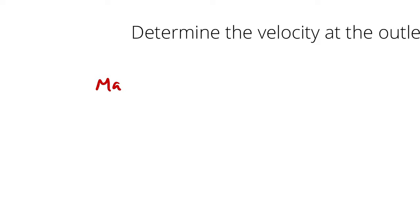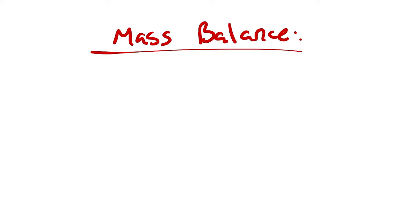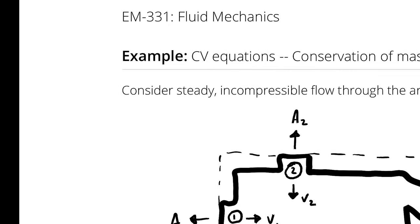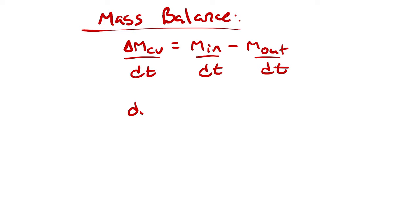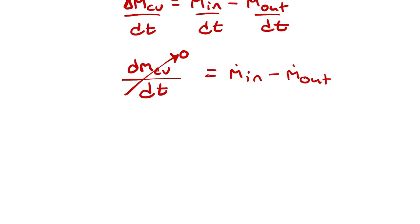In our mass balance, we recognize that we are performing a mass balance on the control volume defined here with our dashed lines. The change in mass of our control volume equals the entering mass minus the exiting mass. Because I have steady state — I was told it's steady — I divide everything by dt, giving dmdt = ṁ_in minus ṁ_out. Then dmdt is zero because for steady flow nothing can change with respect to time. Therefore ṁ_in equals ṁ_out.